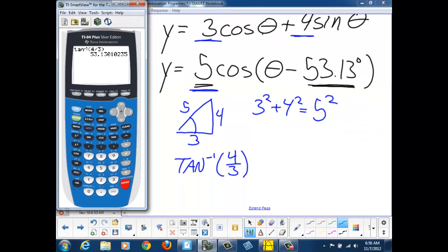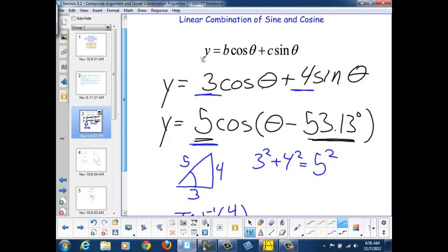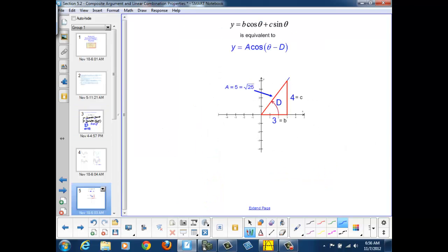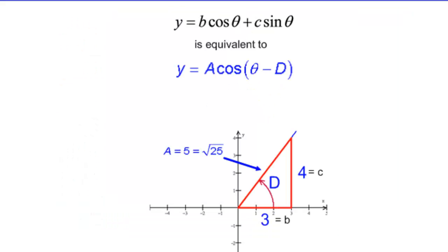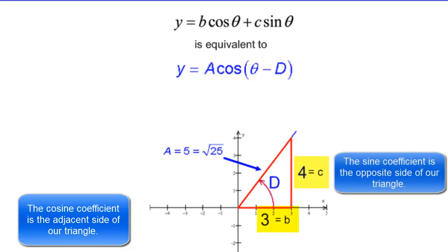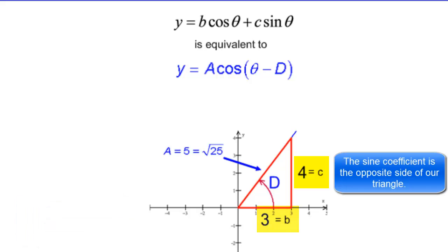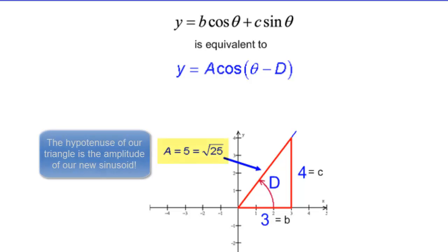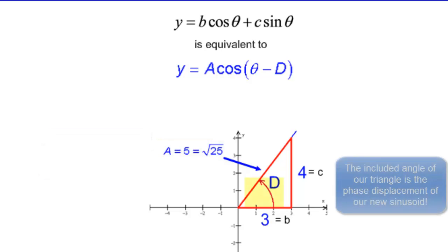This relationship, or relationships, will hold true for any linear combination of a sine and a cosine graph. We can draw a triangle where the coefficient on the cosine term is our adjacent side and the coefficient, or amplitude, of the sine term is our opposite side. And we can find that linear combination by using the amplitude of the cosine graph, the hypotenuse of the triangle as our amplitude, and the included angle as our phase displacement.